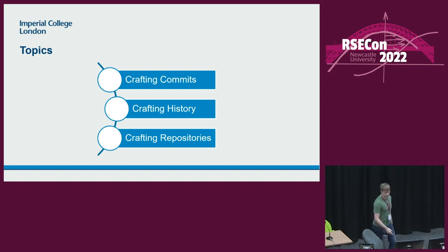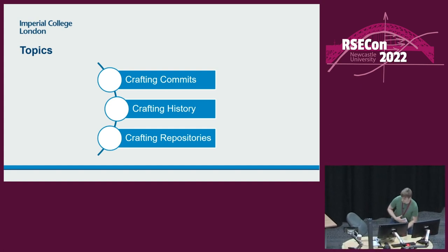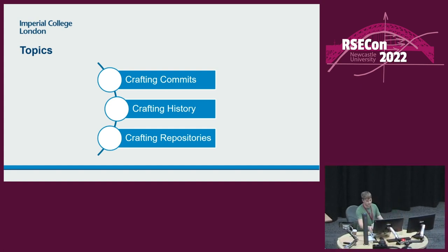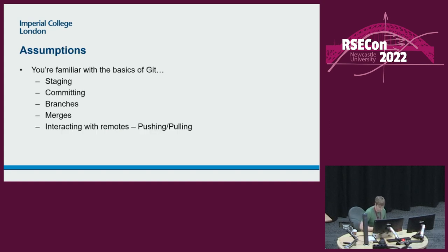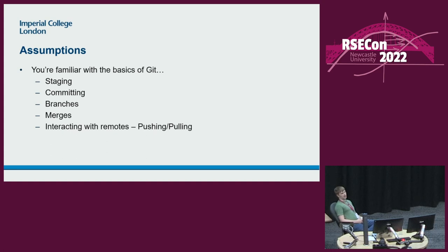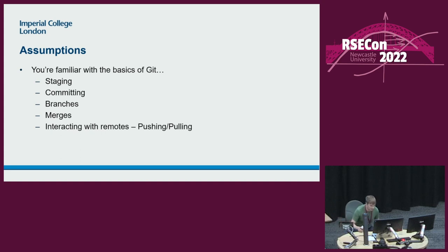I'm probably going to have to sit down for this bit because it's an awkward typing height. A few assumptions: I'm assuming you have a basic working Git knowledge — enough to be working in some sort of collaborative projects. You're used to staging and committing, branching and merging, probably used to doing PRs and working with remotes. And then we're going to try and build some stuff on top of that. Some of it will probably be stuff you know already; some of it, hopefully, might not be.